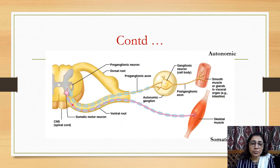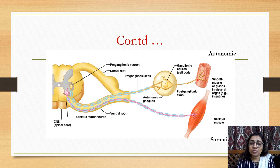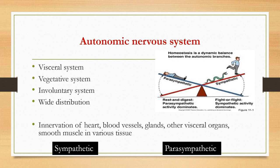In the somatic nervous system the fiber (neuron) is longer and supplies skeletal muscle directly. In the autonomic nervous system, the supply is pre-ganglionic to a ganglion, and then post-ganglionic to the organ. The autonomic nervous system represents a balance between sympathetic and parasympathetic activity. Both systems act on the vessel system, vegetative system, and involuntary system and are widely distributed.